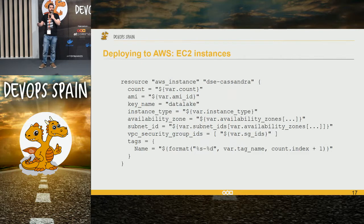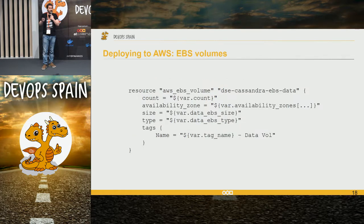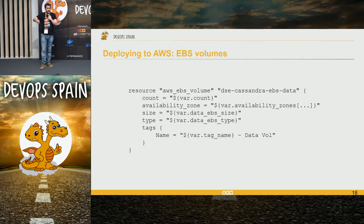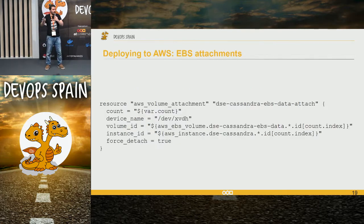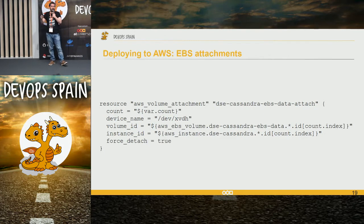Terraform is super easy — it's all about resources. You need to install Cassandra and Kafka on AWS, so you need some EC2 instances — that's the AWS instance resource in Terraform. Then you need some hard drives, because one is a database and the other is a distributed log. So you create an AWS EBS volume. And the last thing you need to do is attach the hard drives to the instances — you can do that with Terraform as well.